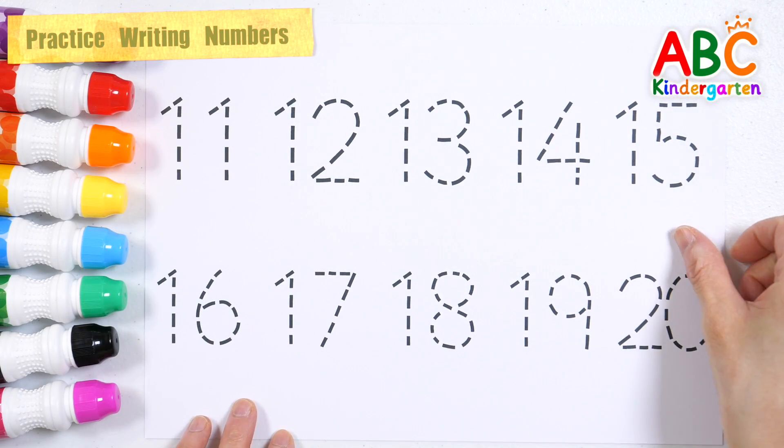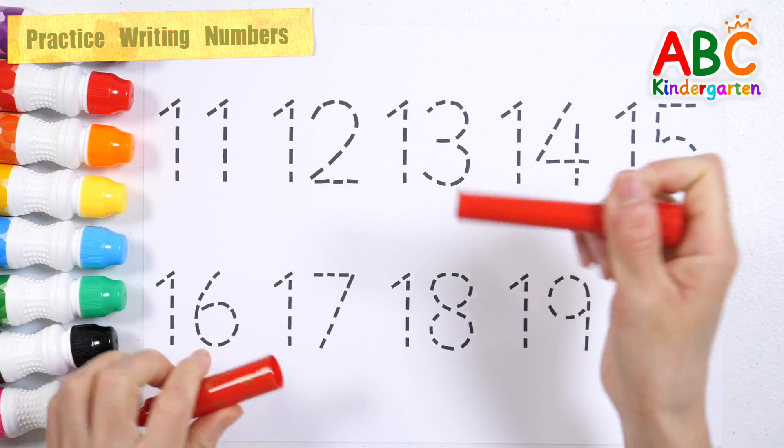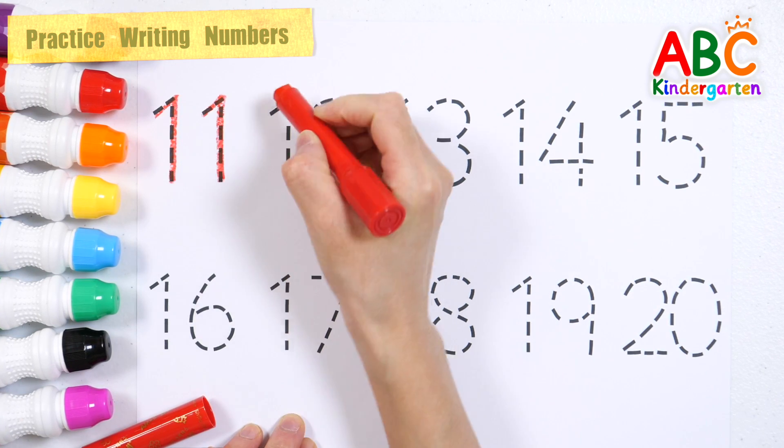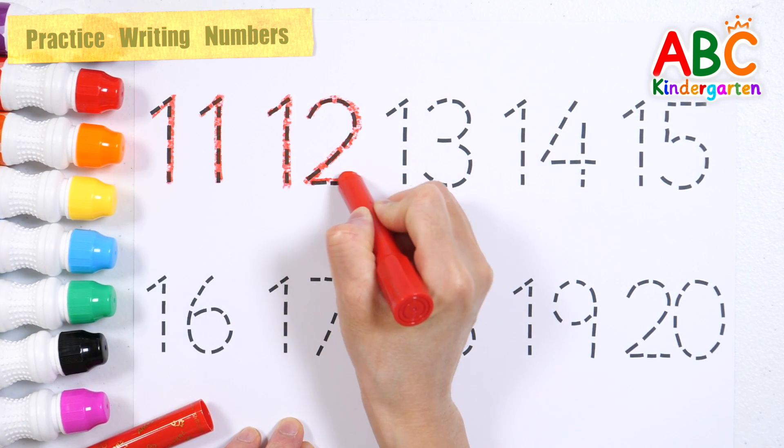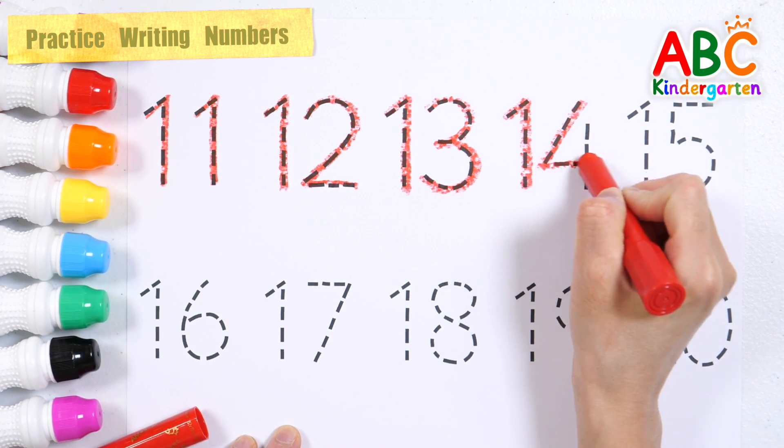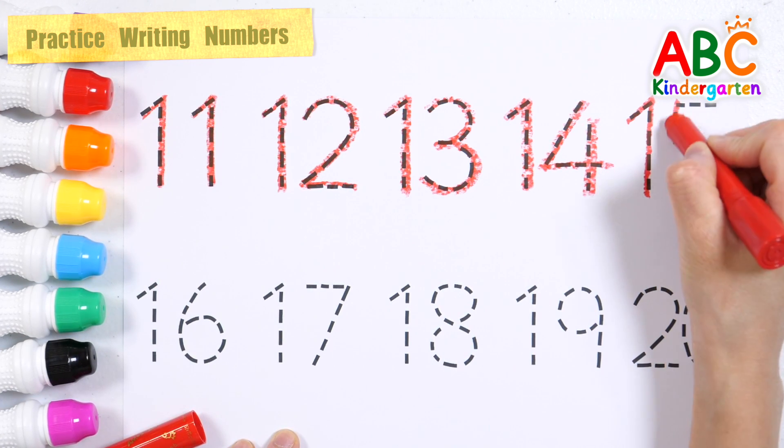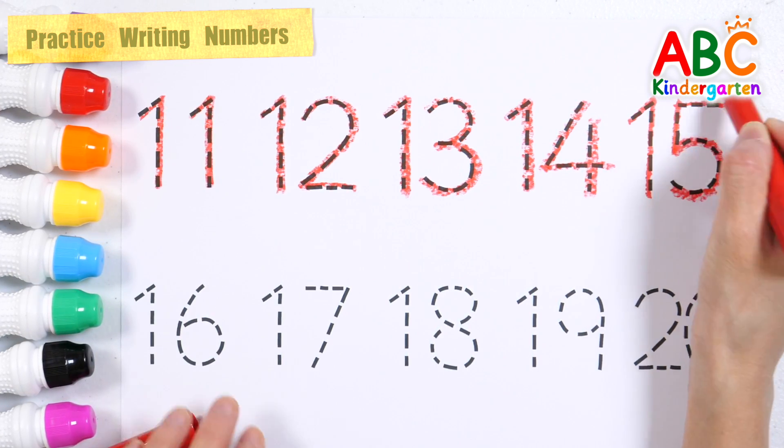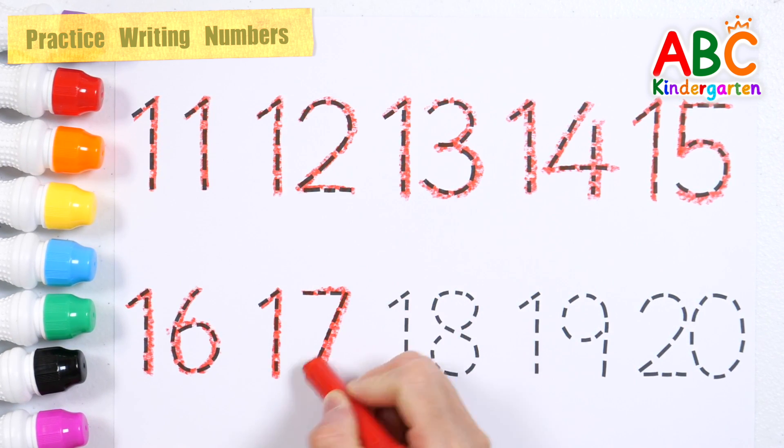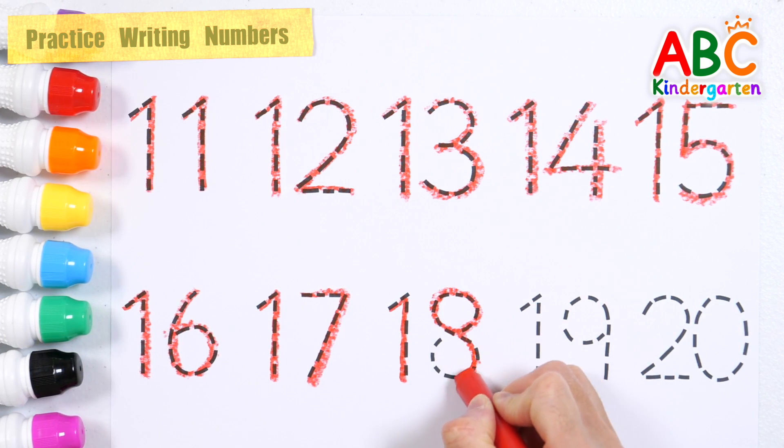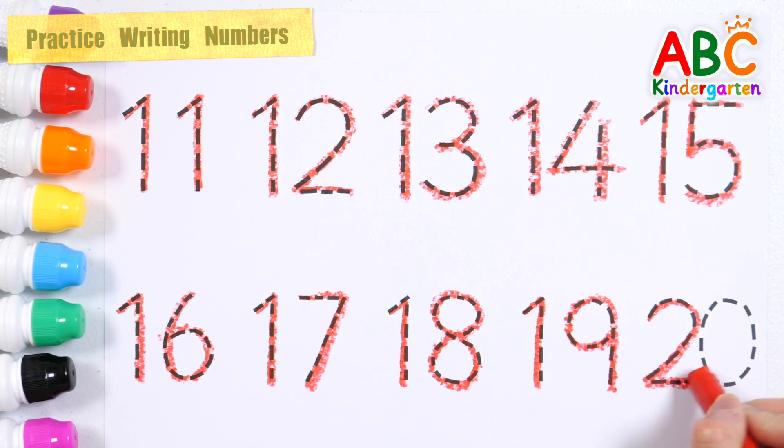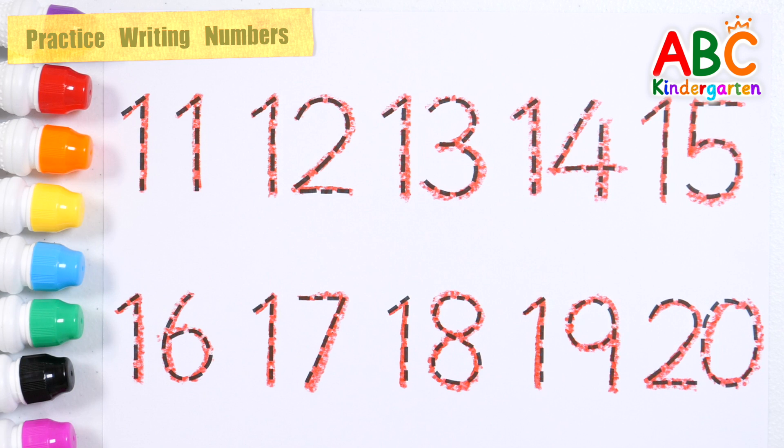Write the numbers 11 to 20 in red crayon and read them. 11, 12, 13, 14, 15, 16, 17, 18, 19, 20. Good job!